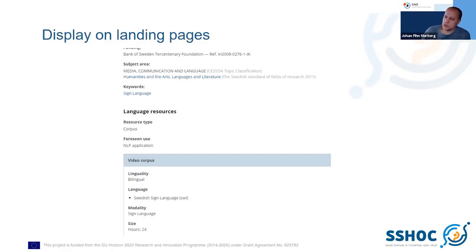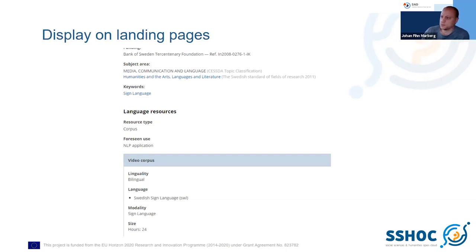We do have in the DORIS system a possibility for users to add a free text term. Here the user hasn't found 'sign language' or was perhaps a little lazy in searching the actual ontology lists, so they've added sign language as a free text keyword. Otherwise you would see what ontology the term comes from. On language resources you have, for instance, resource type, foreseen use, linguality, modality, et cetera — all controlled vocabularies coming from the META-SHARE standard.